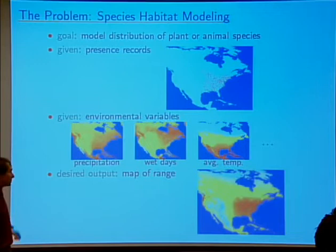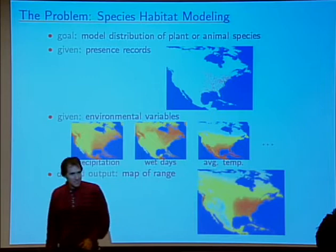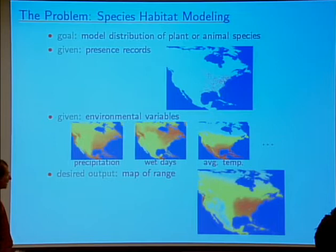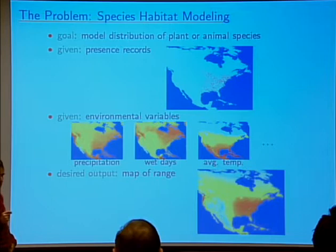In a sense, this is a bad example because there are something like 800 sightings, and if you just kind of blur your eyes, you can see where they like to live. Most of the data sets we're looking at are much, much smaller than this — maybe 20 to 100 points.